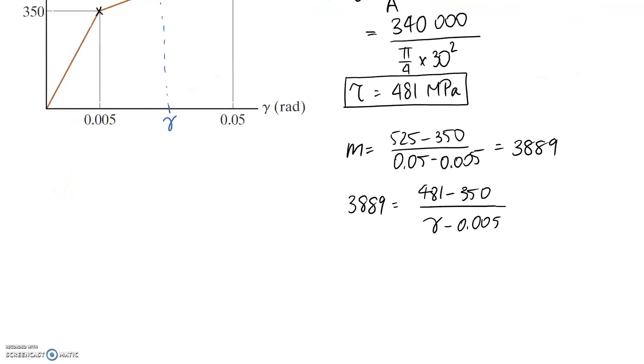So if I go ahead and rearrange this equation, I'm going to multiply this up to the top line, and at the same time I'm going to divide this down. So I end up with a gamma value when I shift this, it gets added when it goes to the other side of the equation, it becomes 0.0387, and the units are in radians for shear strain.